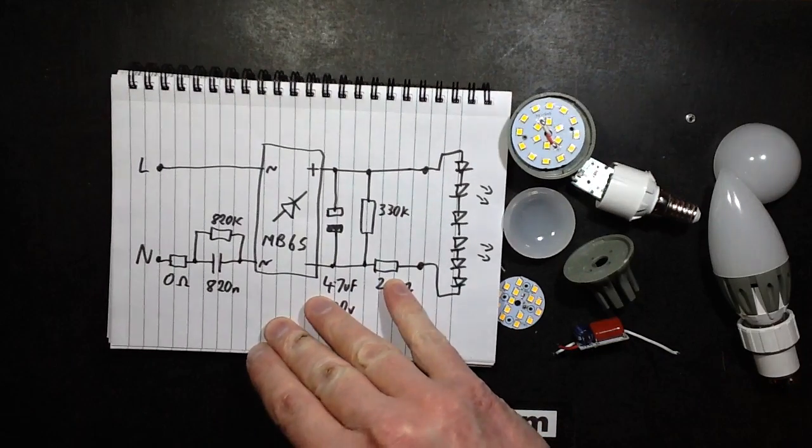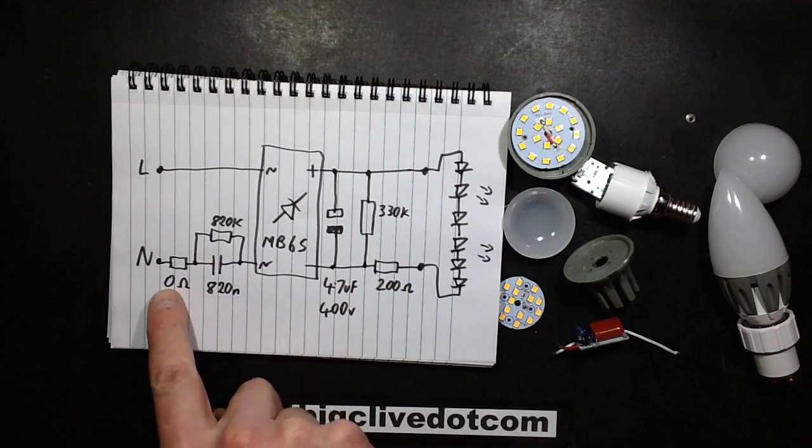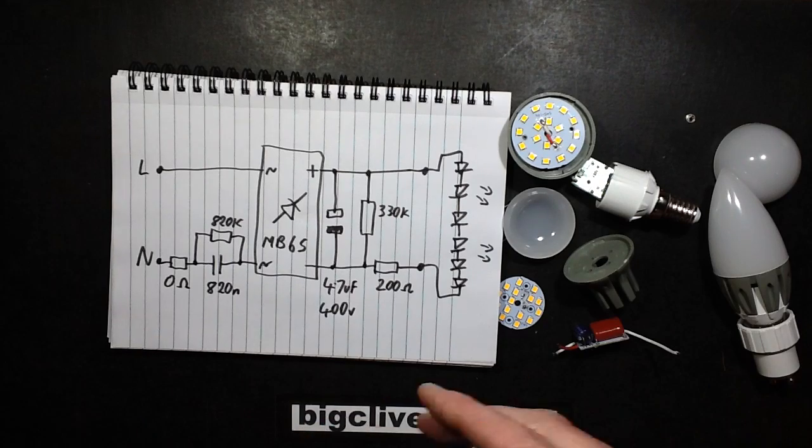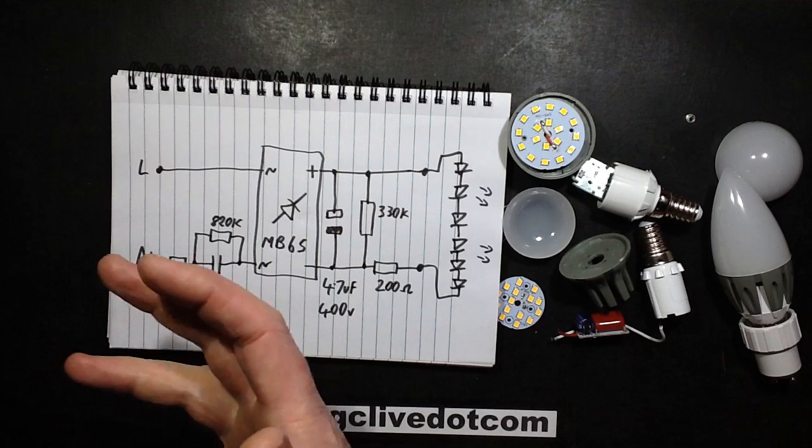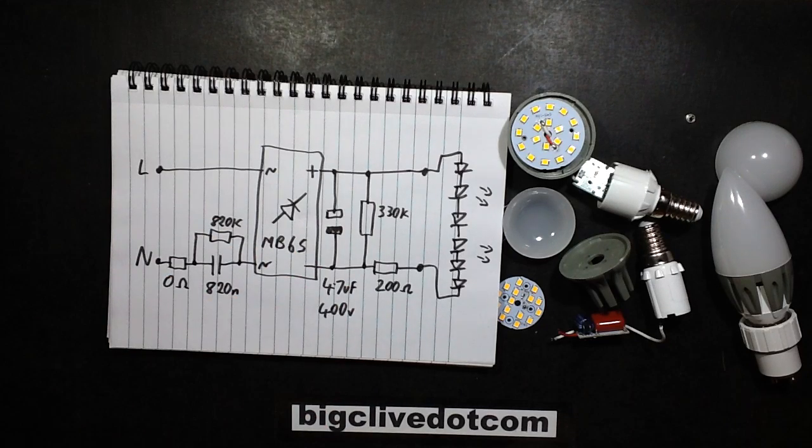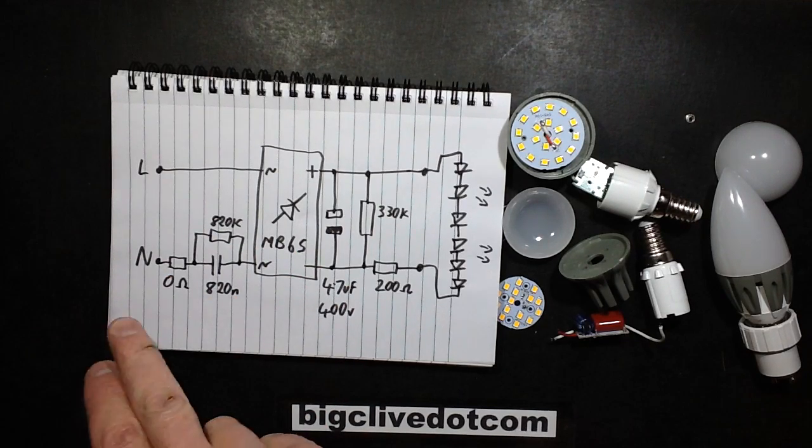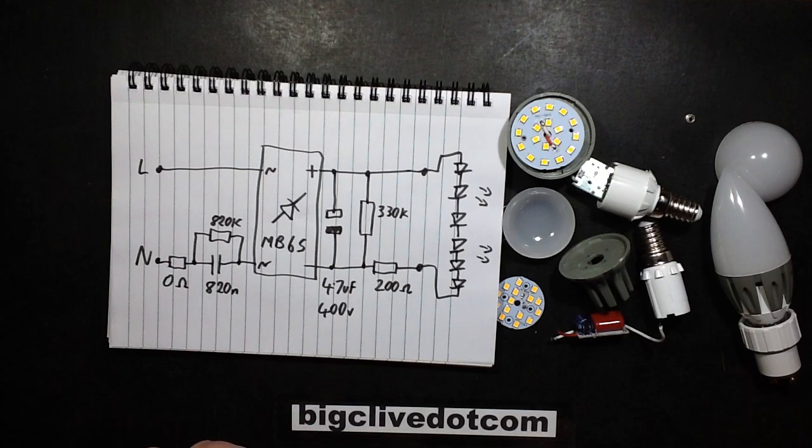As with so many of these lamps, it's just a simple capacitor dropper. They've got a zero ohm link which would normally be used to limit inrush current, but they've chosen just to put zero ohms there. Maybe they've had problems with the resistors blowing at the input. Or they were just saving pennies by saying we don't really need it.